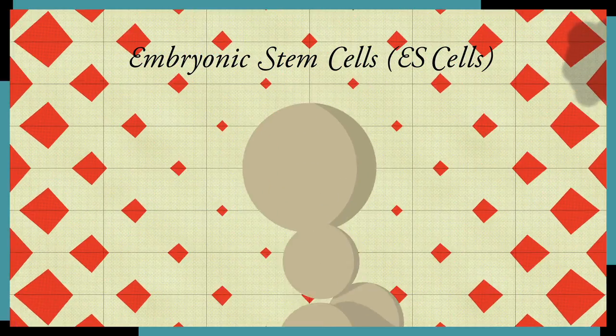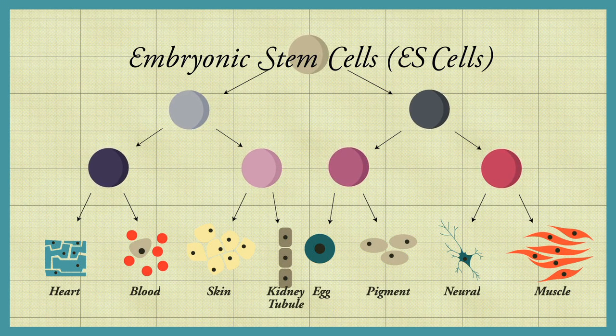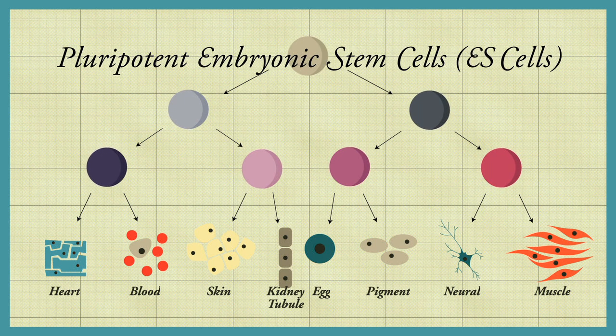Like cells in the developing embryo, ES cells retain the ability to form any type of cell in the adult body. Thus, ES cells are said to be pluripotent.